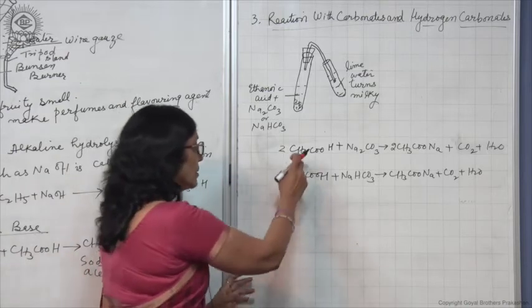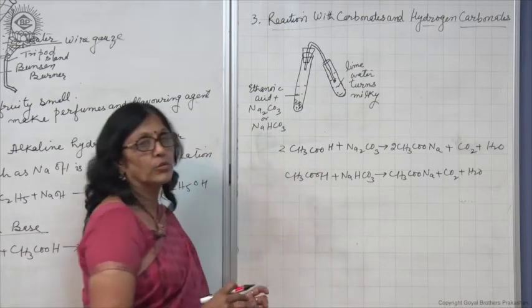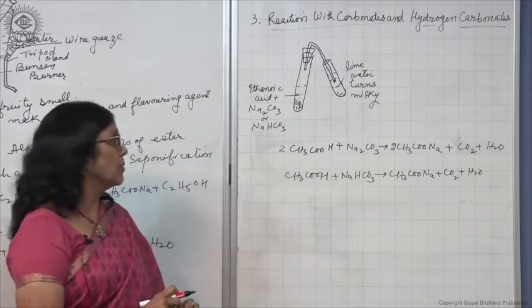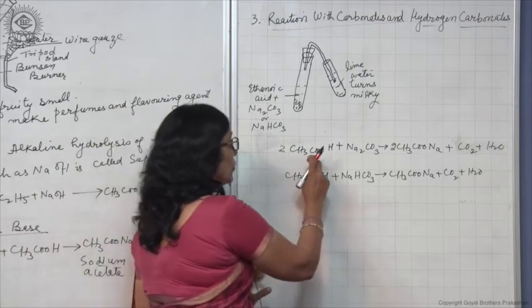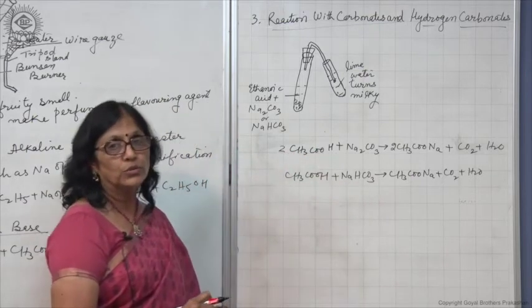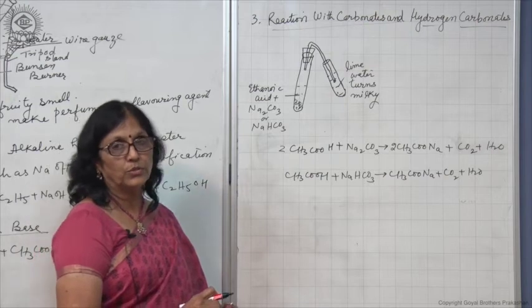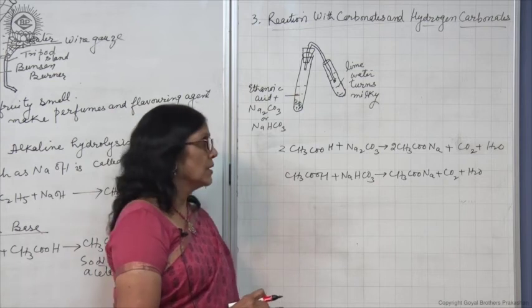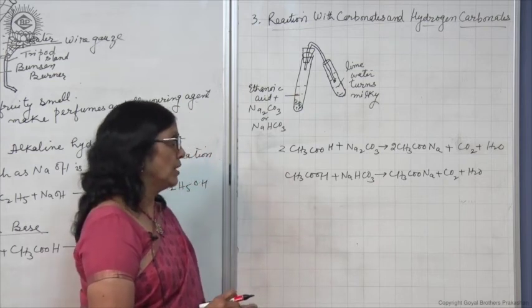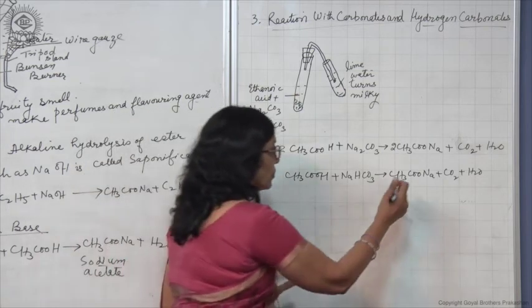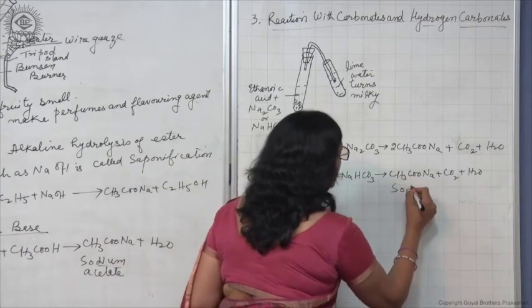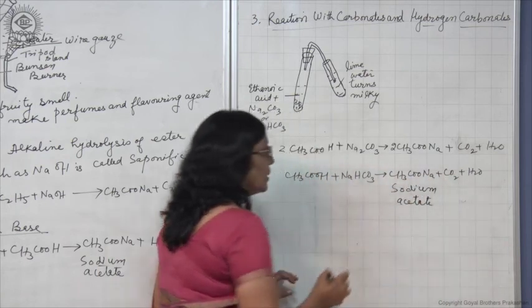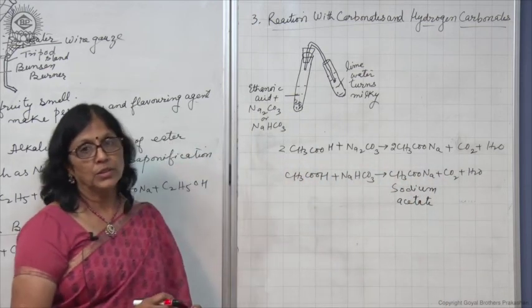Like all other acids, ethanoic acid also behaves in the same manner. See this balanced chemical equation representing the chemical reaction: 2CH3COOH plus Na2CO3 gives 2CH3COONa plus CO2 plus H2O. Sodium acetate forms in both cases and carbon dioxide is liberated in both cases.